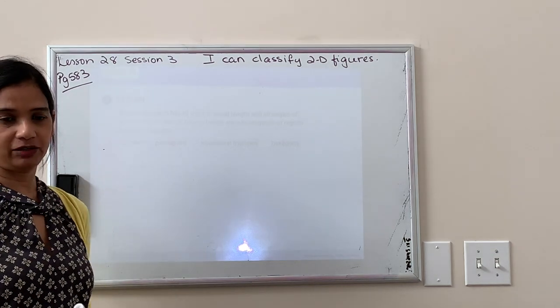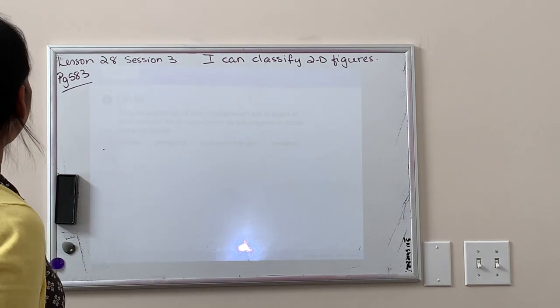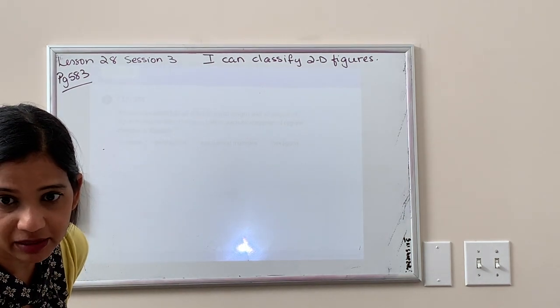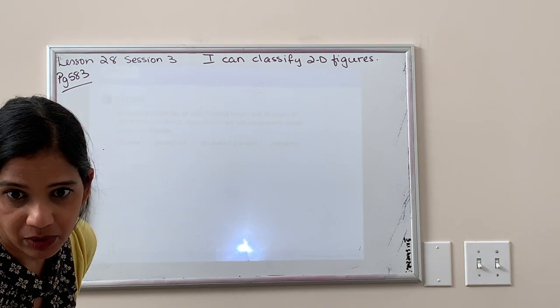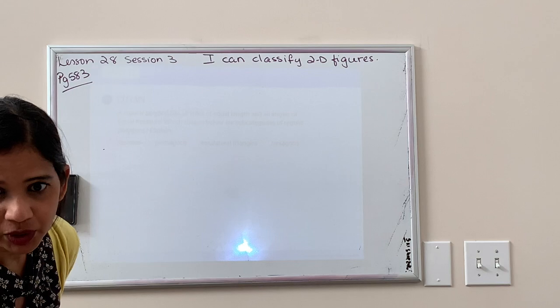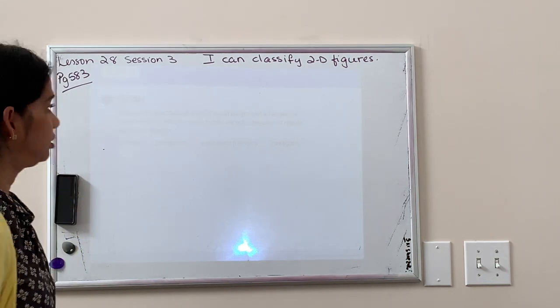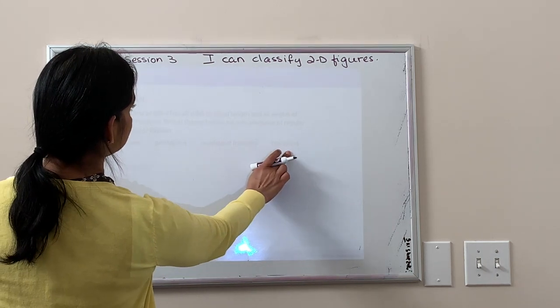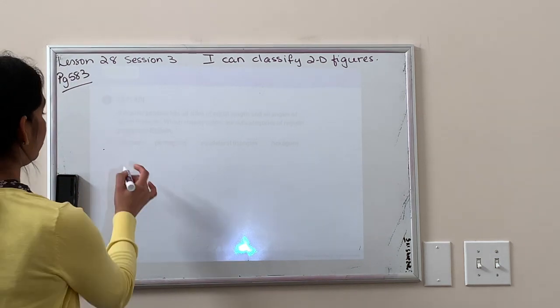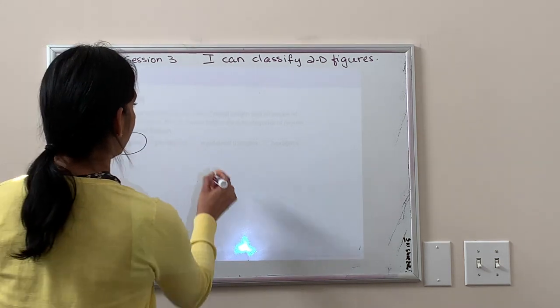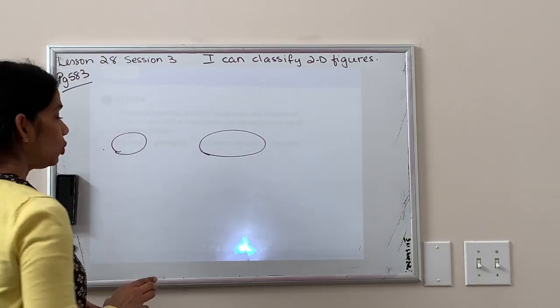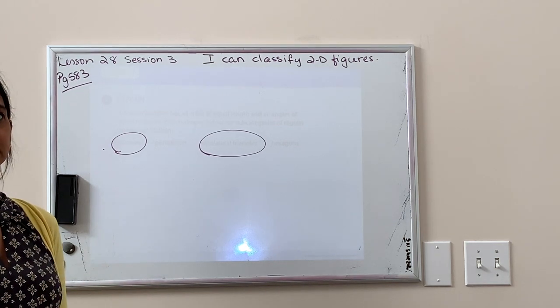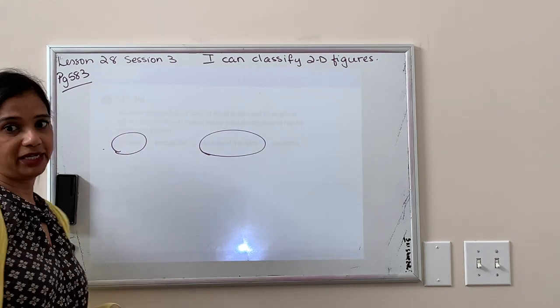A regular polygon has all sides of equal length and all angles of equal measure. Which shapes below are subcategories of regular polygons? Here we have squares, pentagons, equilateral triangles, and hexagons. It's going to be squares and equilateral triangles, because all of those, they are equal sides. They're all sides are equal and the angles are all the same.